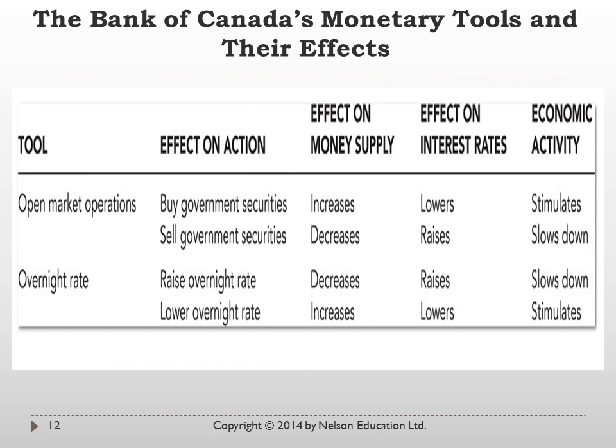This slide can be used for study purposes — think about what would happen if the Bank of Canada bought or sold government securities or raised or lowered the overnight rate. Make sure you have a clear understanding of how that can affect interest rates, the money supply, and economic activity in Canada.